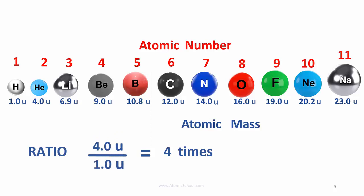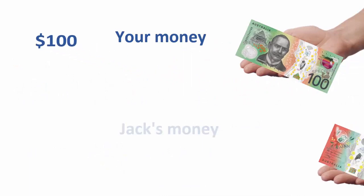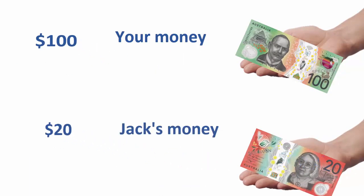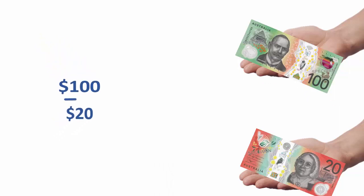You can do this with any comparison of amounts. If you have a hundred dollars and Jack has twenty dollars, how many times richer are you? Divide one hundred by twenty. Five times.